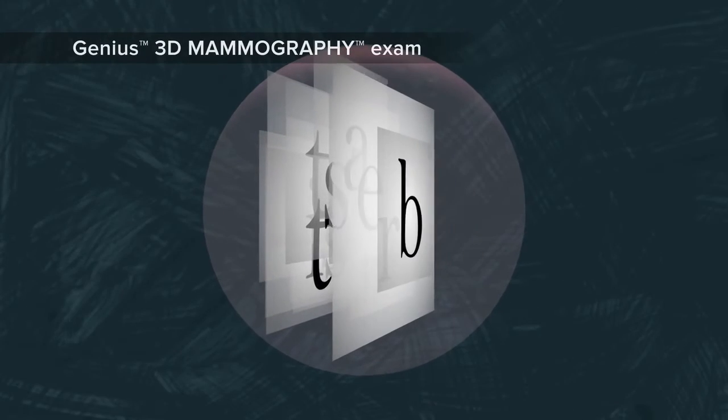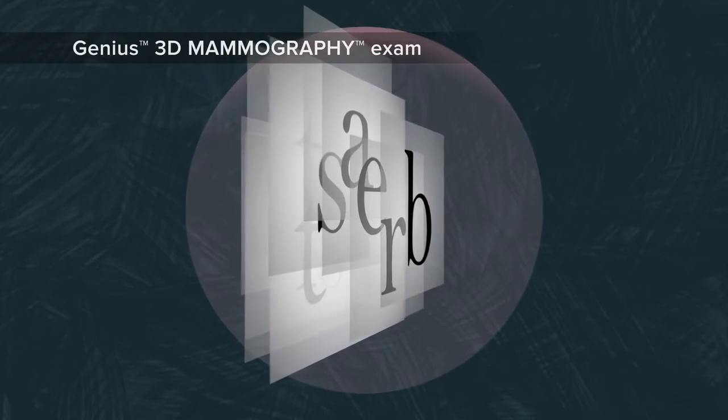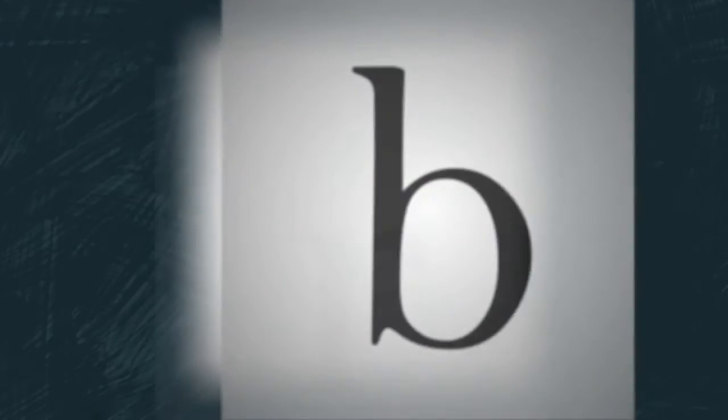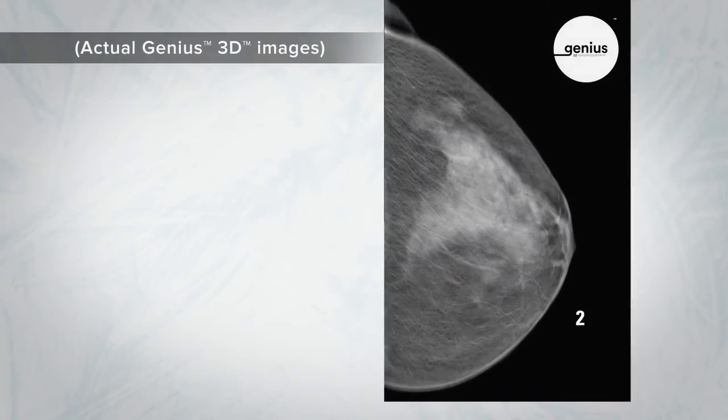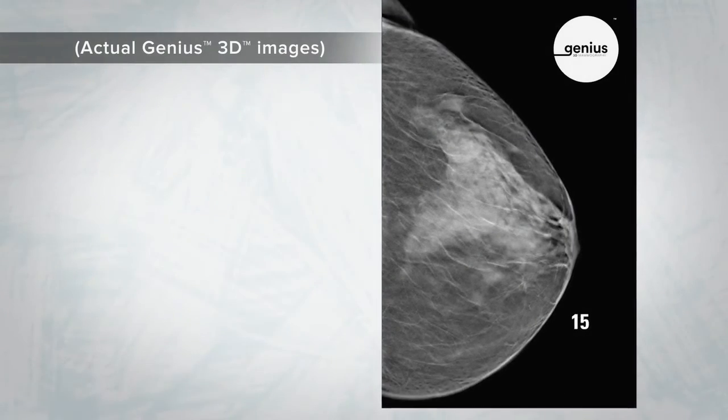A Genius 3D mammography exam is different because it shows your tissue in very thin layers, almost like turning pages in a book. There's less chance for a cancer to hide behind overlapping tissue.